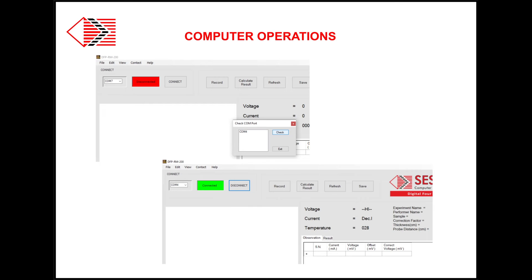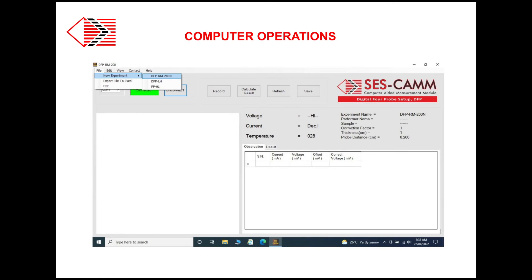Next, click View option and check the connected COM port of the computer. Now fill this COM port number and click Connect option. If the system is connected, it will show green color. Next, choose the required experiment option: resistivity measurement or band gap measurement.